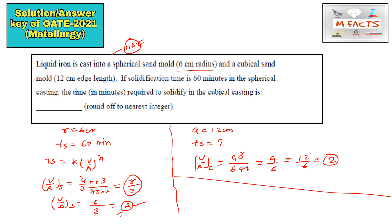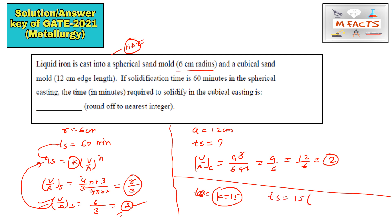To verify: for the sphere, using V/A = 2 and t_s = 60 minutes, you can find k = 15. For the cube, V/A = 2 as well, so substituting back gives t_c = 60 minutes. The correct answer is 60 minutes, because the modulus of casting (V/A ratio) is the same for both shapes.